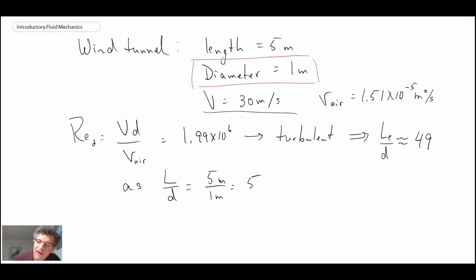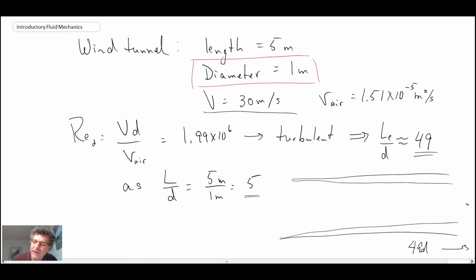And if it takes 49 entrance lengths for that potential core to collapse, we can safely assume that our model is probably in pretty good air. So we would have something like this: the boundary layer slowly growing. It's going to take all the way to 49 diameters to get to the point where that potential core would collapse. I haven't really drawn it well on here but it's way down there you would get a collapse of the potential core. And we're dealing up here in the front 5 diameters. So what we can assume is that our model will be in nice clean flow.